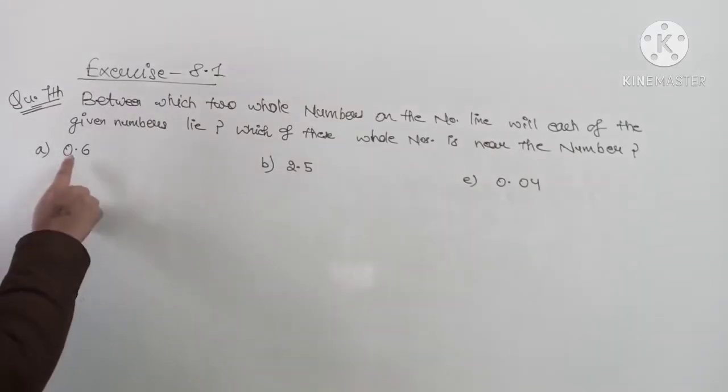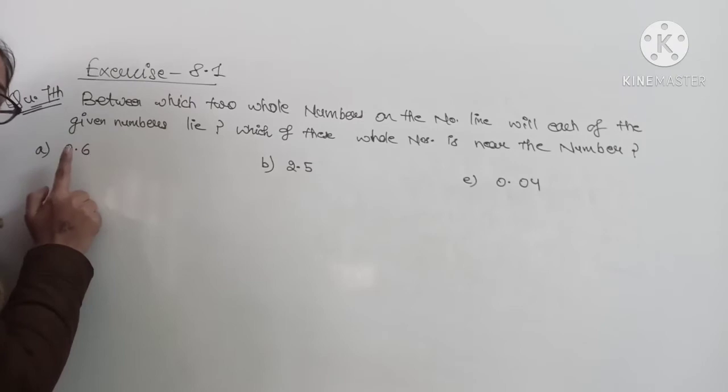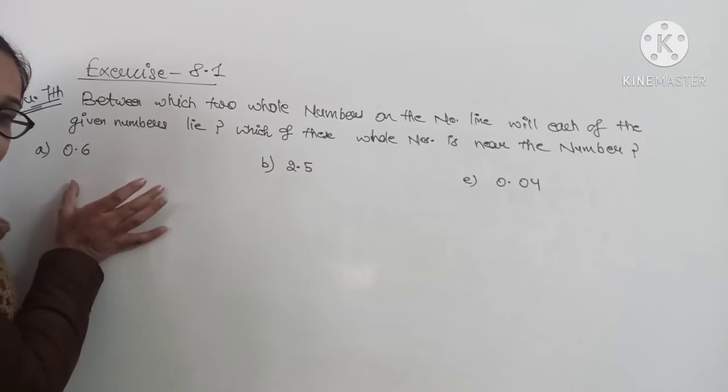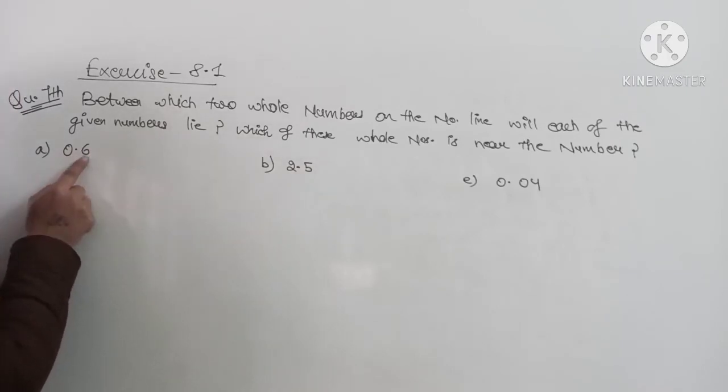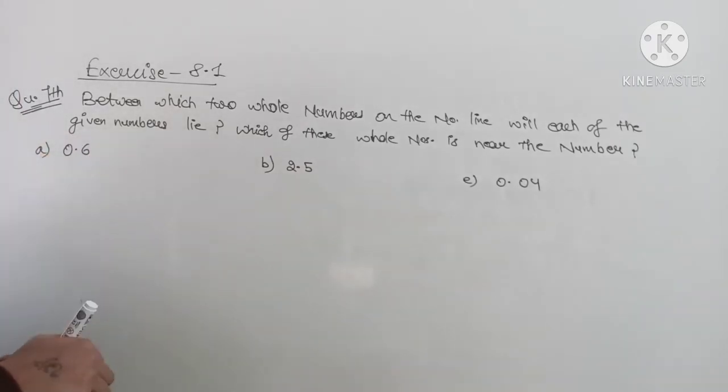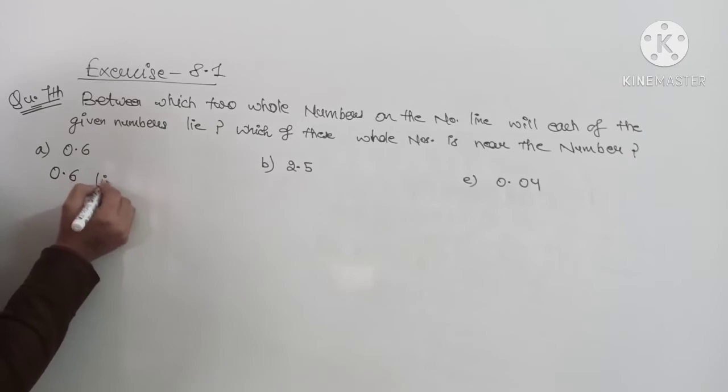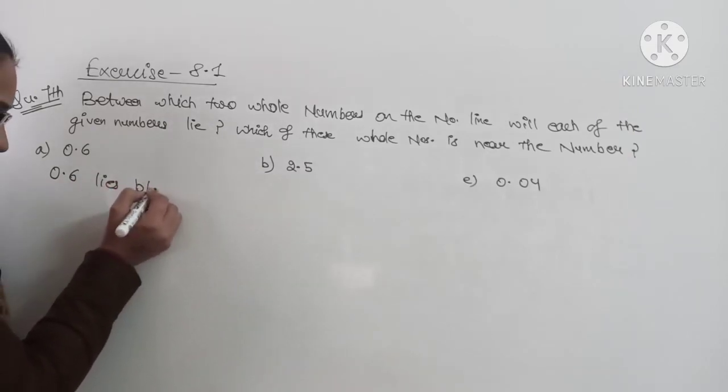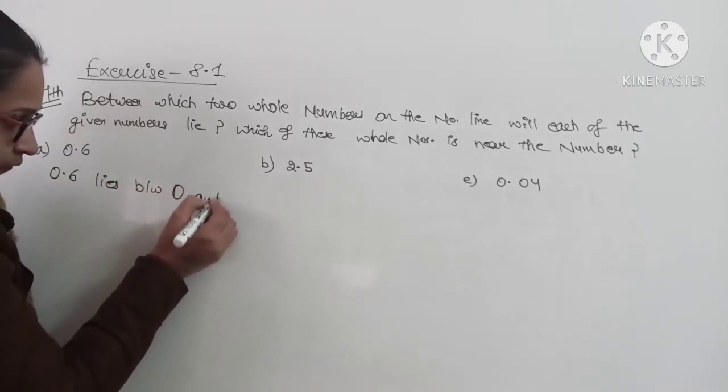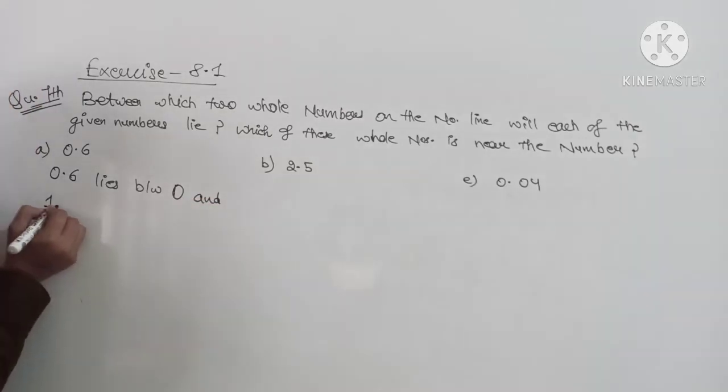So first part is part A: 0.6. It is 0 point something, it means it is greater than 0. And if it is greater than 0, it must be less than 1, so it will lie between 0 and 1. So we will write 0.6 lies between 0 and 1, which are whole numbers.